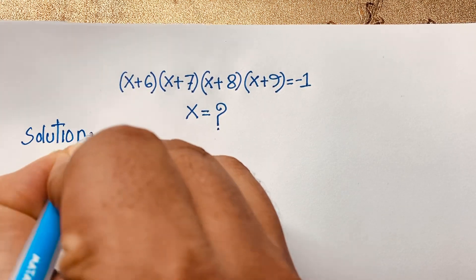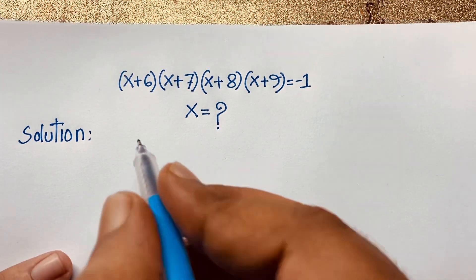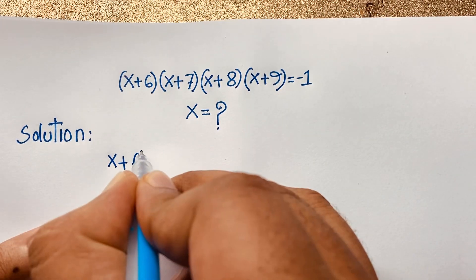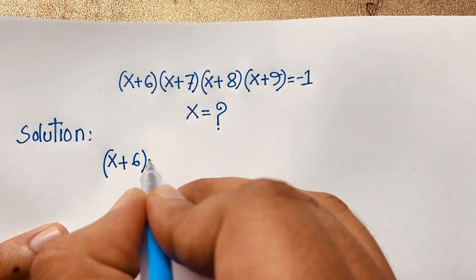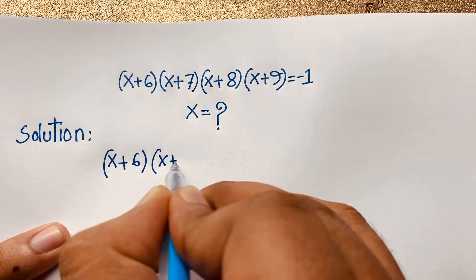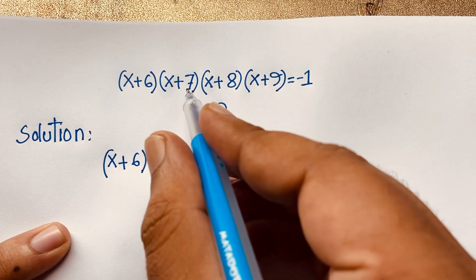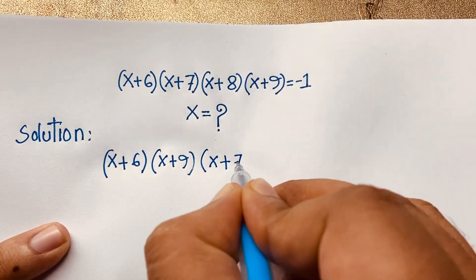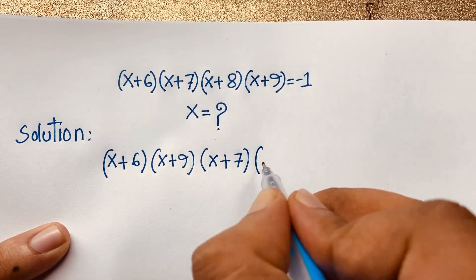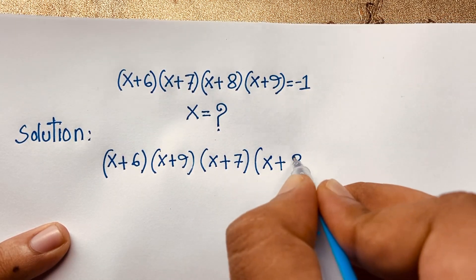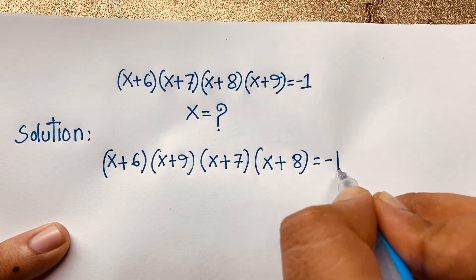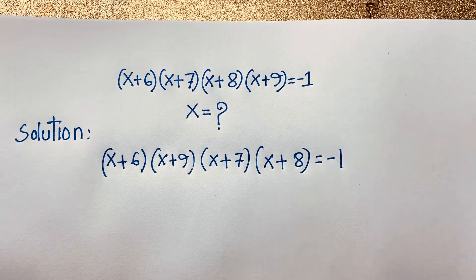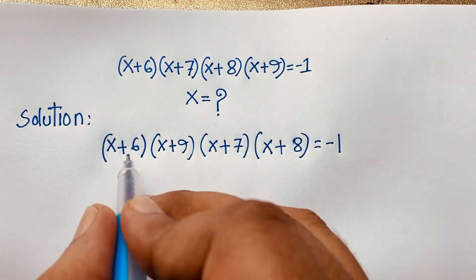For the solution, we rearrange: (x + 6)(x + 9) times (x + 7)(x + 8) = -1. Notice that both pairs are strategically grouped — this value and this value will be the same structure.